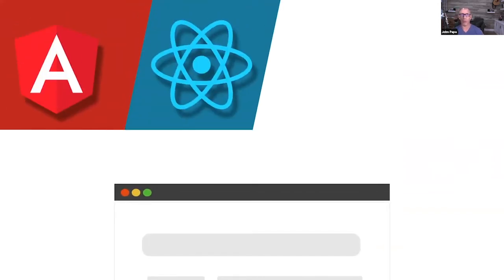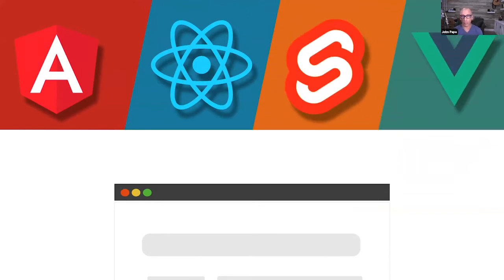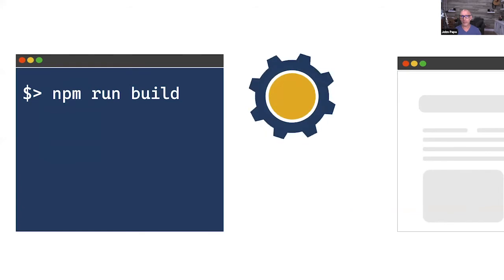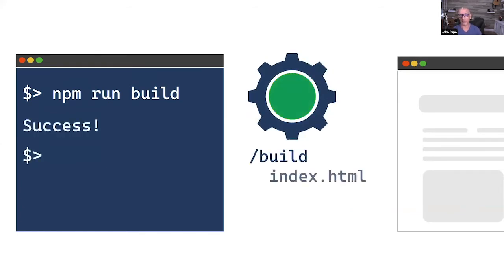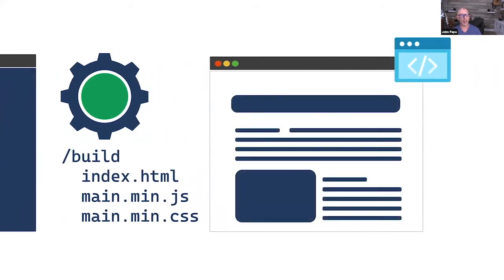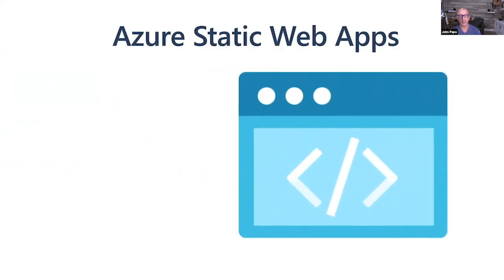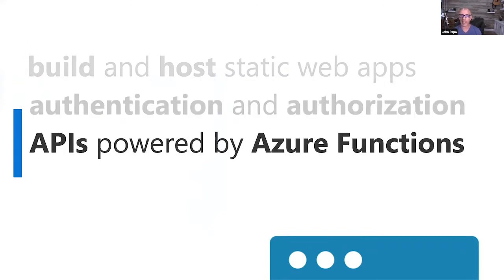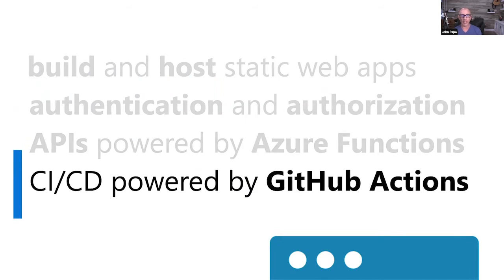You can choose Angular, React, Svelte, or Vue — or other frameworks. We'll give you code for a fully functioning app with one of these four frameworks. We'll use npm run build to build the assets, creating the static files — JavaScript, HTML, and CSS. You'll also get authentication, authorization, APIs, and CI/CD with GitHub Actions. Everything deployed is served at the edge globally so people in different regions get the fastest access.